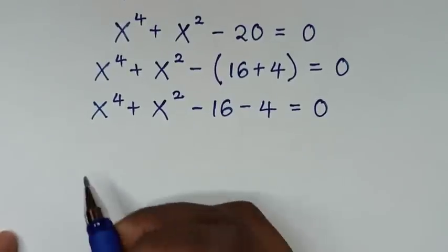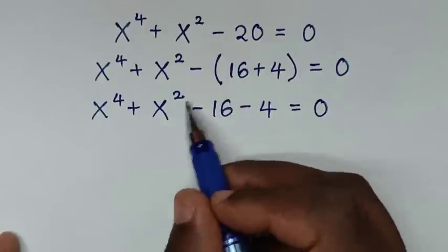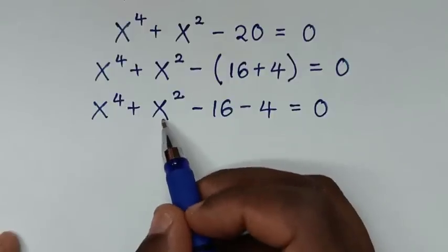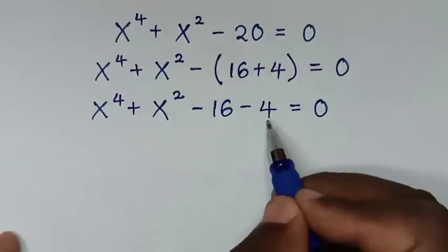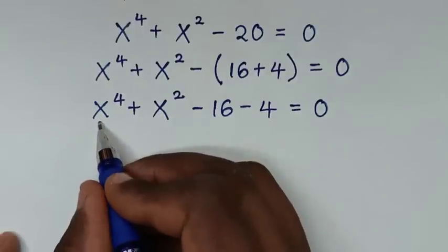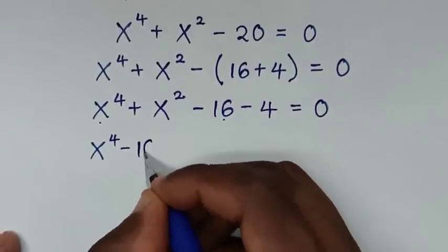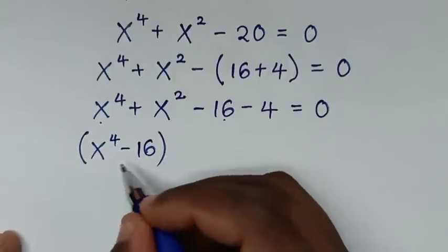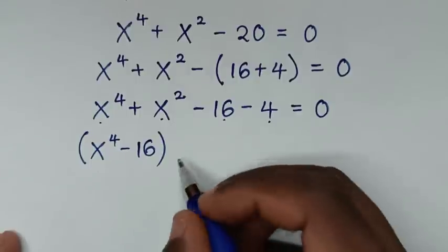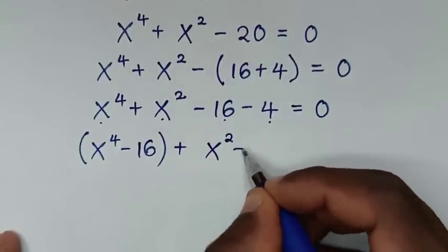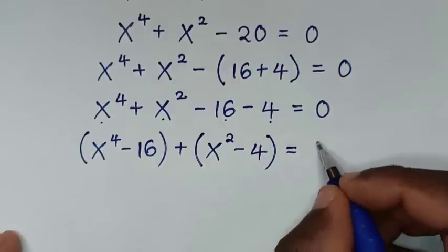From here, x to the power 4 with the largest power is grouped together with minus 16, and x to the power 2 with the smallest power is grouped with minus 4. So it becomes: (x⁴ - 16) plus (x² - 4) equals 0.